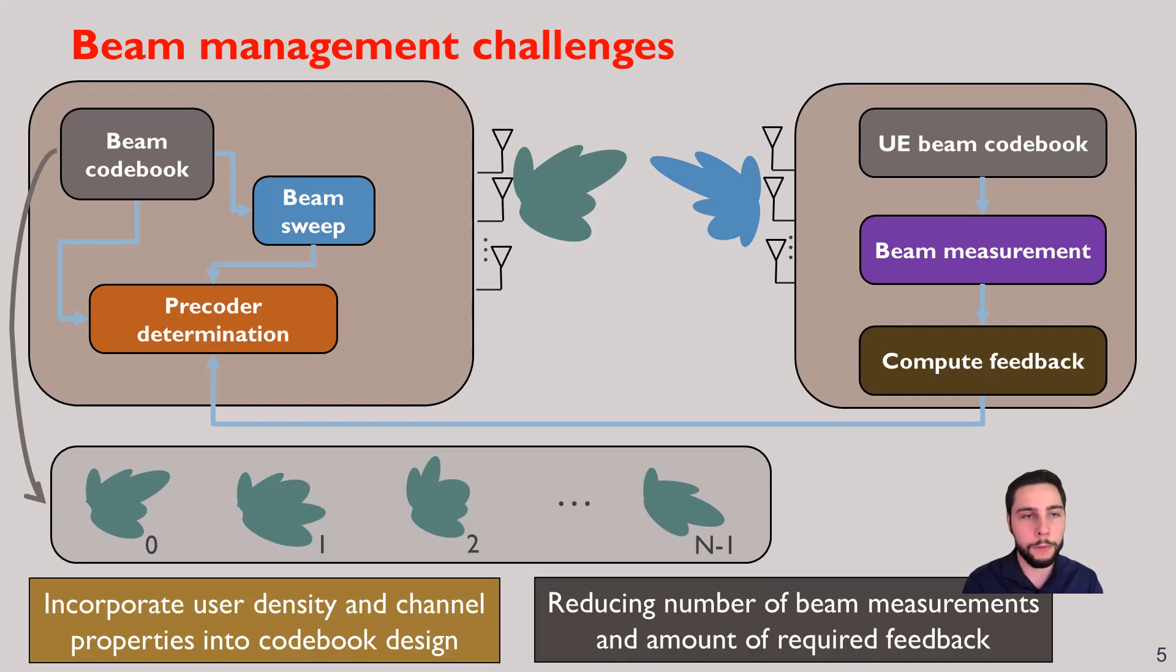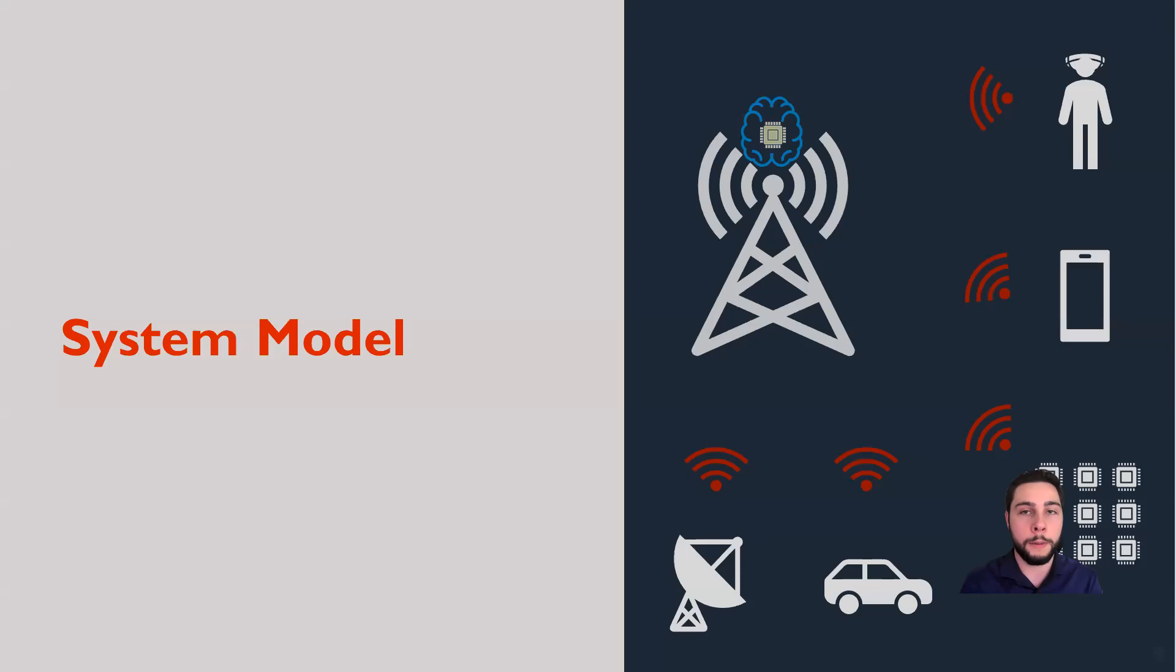In general, the beam codebook really needs to be designed to take into account things like the user density and the channel properties to optimize for the best situation. Otherwise, you end up with either very large codebooks that require a lot of feedback in order to obtain a good link, or a small codebook that doesn't end up providing very much information. Given all this, we're going to talk about how we set up the problem of initial access and determining and designing the beam codebook using machine learning to help improve it.